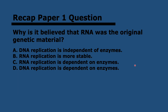That's all the content for this section. The answer to why it's believed RNA was the original genetic material is D. DNA replication is dependent on enzymes, and enzymes come from DNA indirectly — so it's impossible for DNA to replicate without enzymes, and since DNA is required for that, it is impossible that DNA was the original genetic material. That is the reason why RNA is believed to have been the original material. Let me know if there are any questions or feedback, and I'll see you soon for the next topic. Thank you.